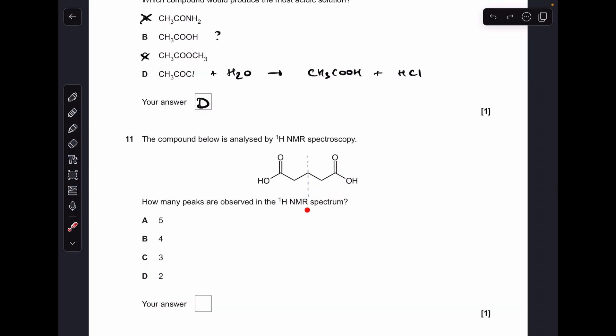Question eleven. We've got a line of symmetry down the middle of the molecule, so anything equidistant either side is equivalent. We've got one, two, three environments, so C is the answer.